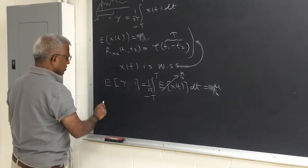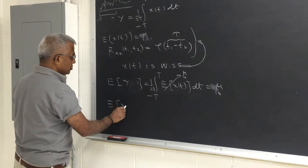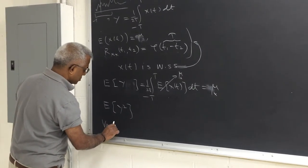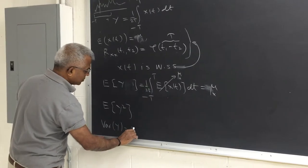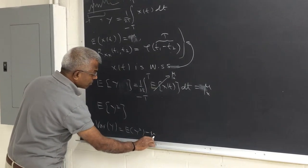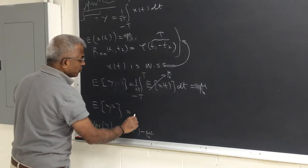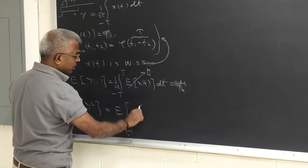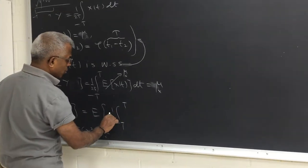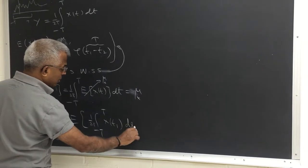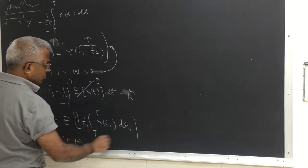Now let's look at its square because variance is, of course, expected value of y squared minus μ squared. So this is the expected value of the integral from minus t to t, 1 over 2t, x of t1 dt1, absolute value squared.